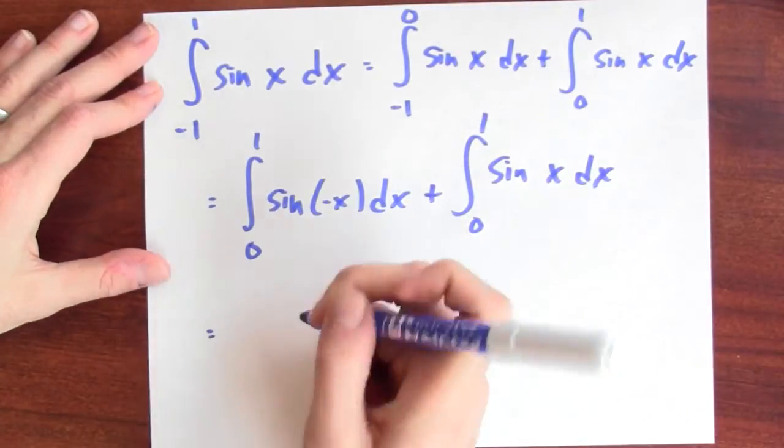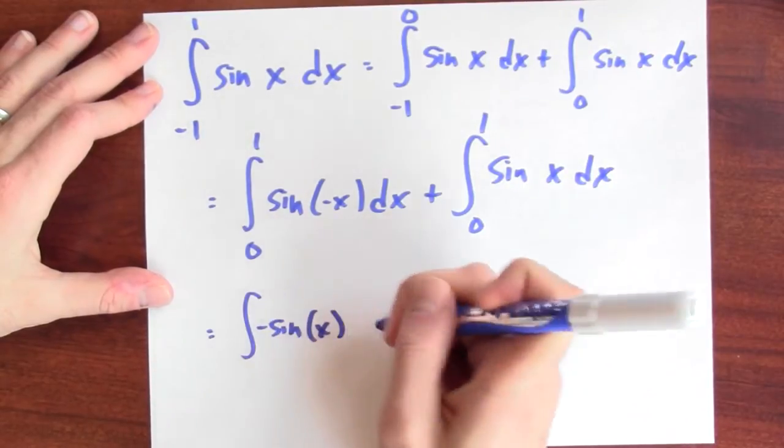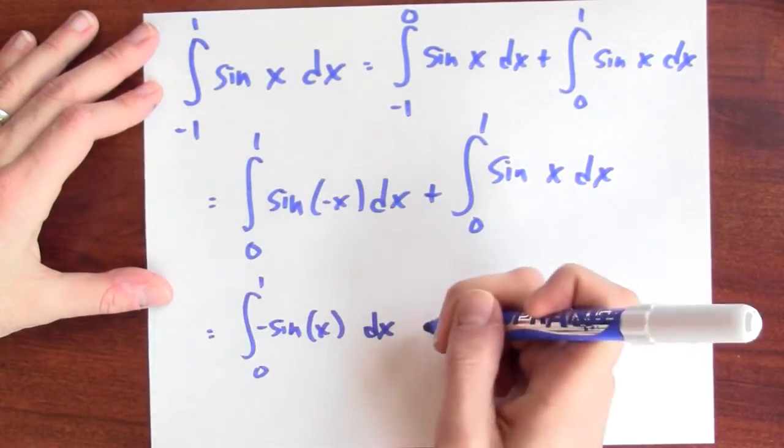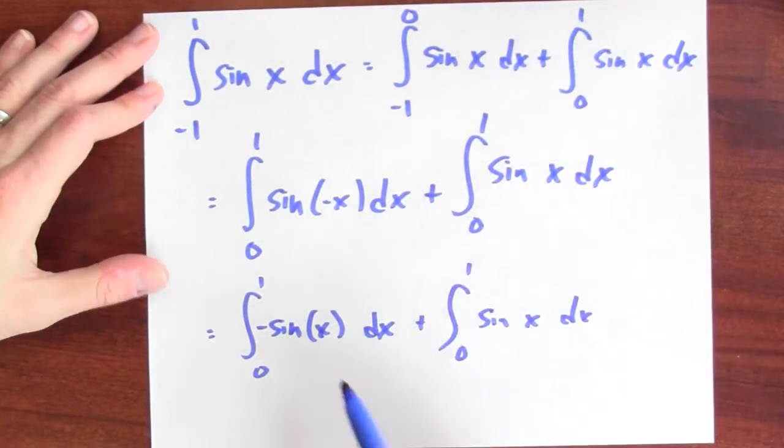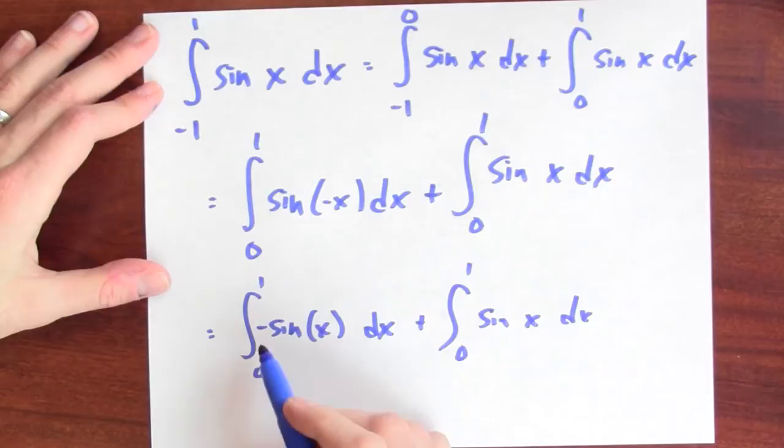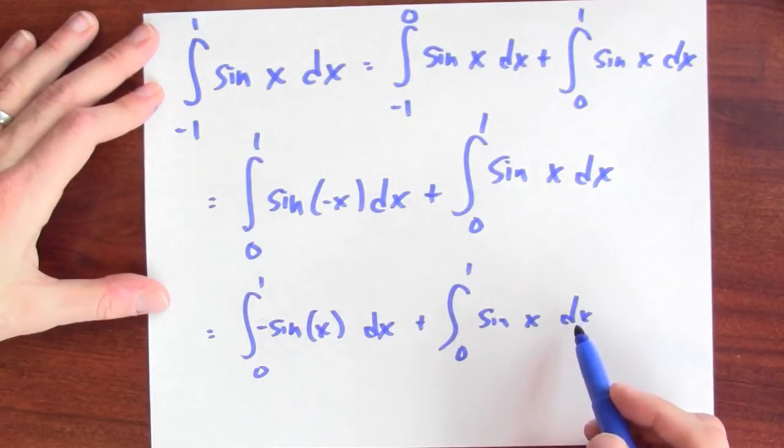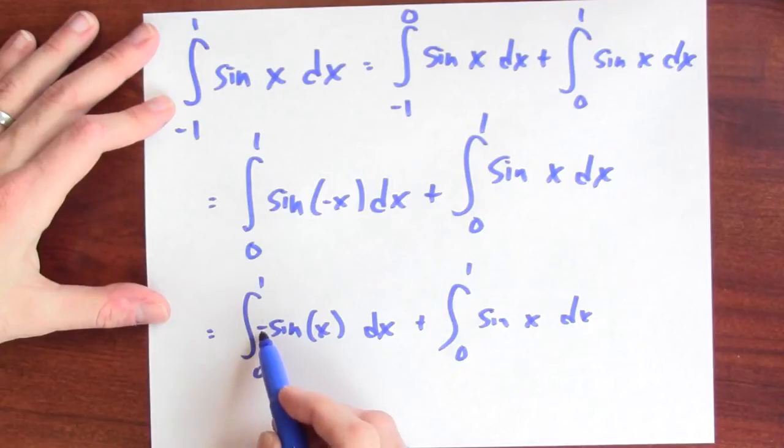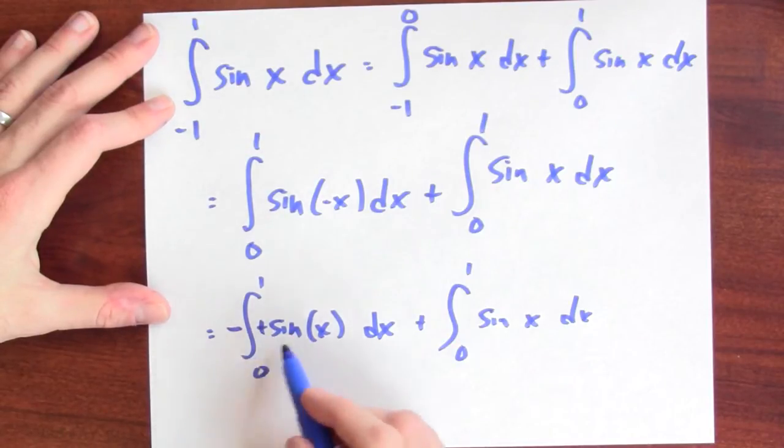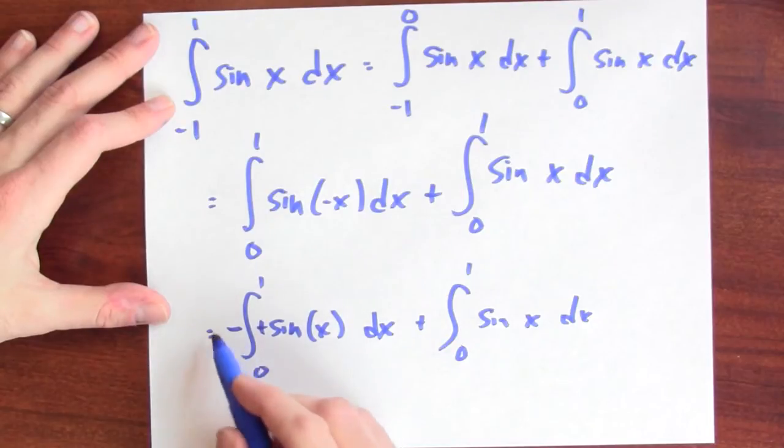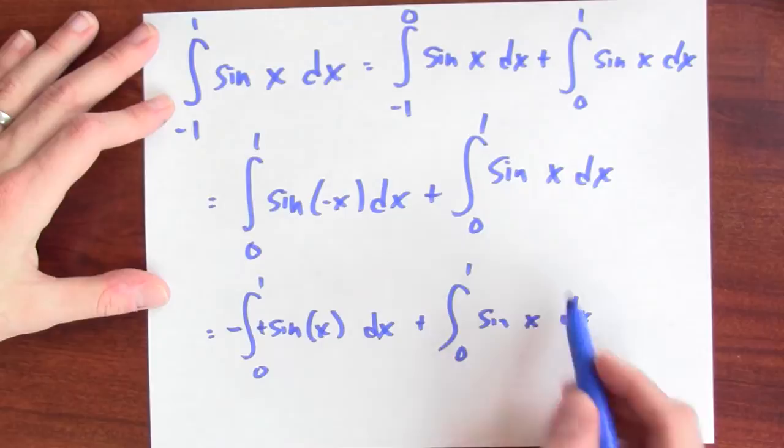Now, what's sine of negative x? That's negative sine of x. And here I've just got sine of x dx again, but now I've got the integral from 0 to 1 of negative sine dx plus the integral from 0 to 1 of sine dx. Well, I can pull this minus sign out of the integral. If I'm integrating just a constant times something, it's the same as that constant times the integral. And now I've got negative something plus the same thing, so that is equal to 0.